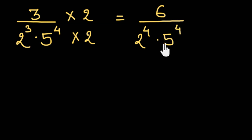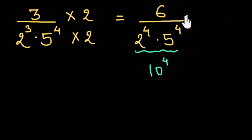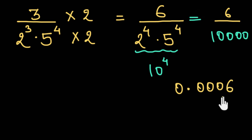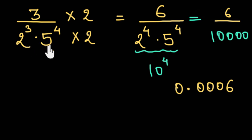So this denominator we can write as 10 to the power 4. Finally, 3 upon 2 cubed times 5 to the power 4 becomes 6 divided by 10 to the power 4, which gives us 0.0006 — indeed a terminating decimal. So even if we have unequal numbers of 2s and 5s, we can always get equal numbers by multiplying by 2 or 5, whatever we require.